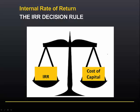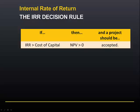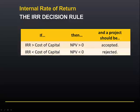The IRR Decision Rule requires us to compare the internal rate of return with the cost of capital. If we find that the internal rate of return is greater than the cost of capital, then the NPV is greater than zero and the project should be accepted. The reverse is also true: if the internal rate of return is less than the cost of capital, the NPV will be less than zero and the project should be rejected.